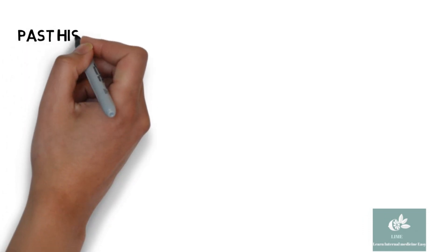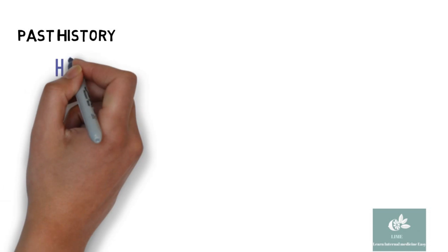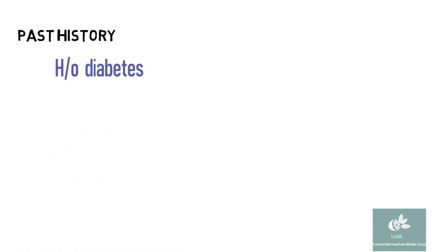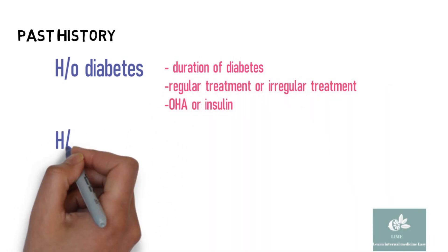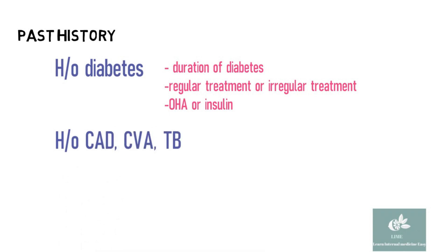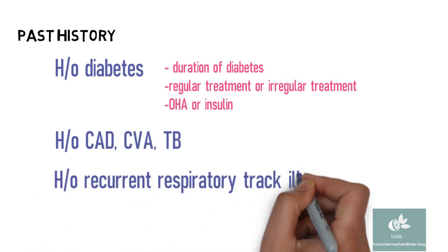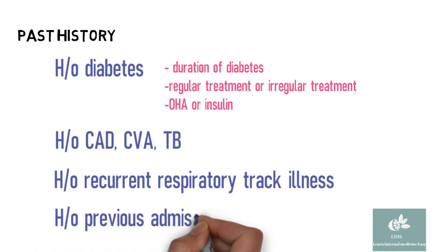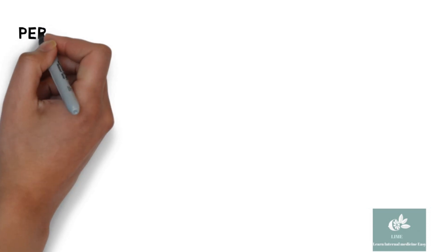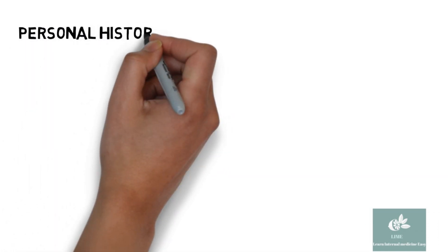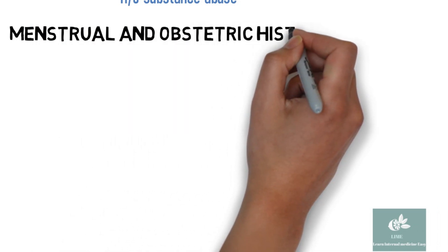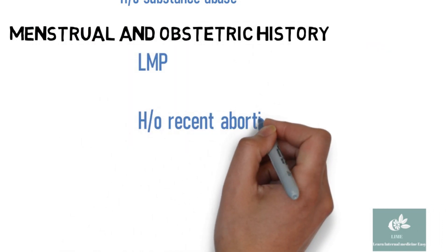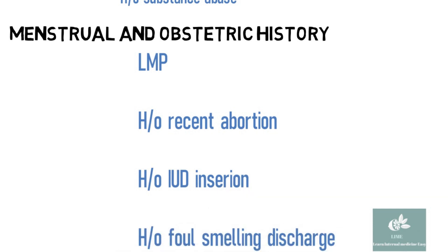In past history, ask about history of diabetes, duration of diabetes, whether treatment is regular or irregular, and whether the patient is taking OHA or insulin. Also ask about history of CAD, CVA, TB, and any recurrent respiratory tract illness. In personal history, inquire about alcohol intake and substance abuse, which can precipitate DKA. In female patients, obstetric and menstrual history is very important — particularly any recent abortion or IUD insertion.